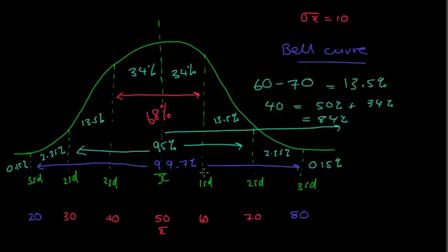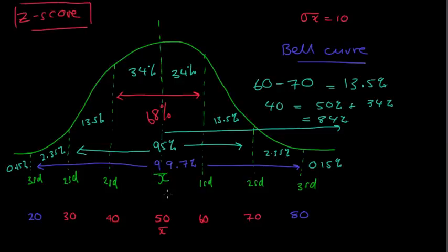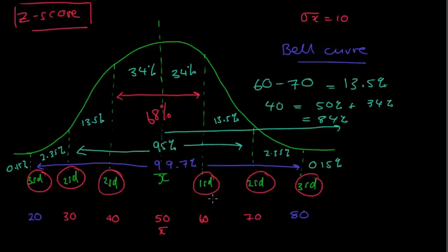Now, I've got these things here — one standard deviation, two standard deviations, three standard deviations. You may have heard of things called Z scores. All the Z score is — it is these numbers here. If you have a Z score of 1, it means you are one standard deviation above the mean. If you have a Z score of negative 1, then you are one standard deviation below the mean.